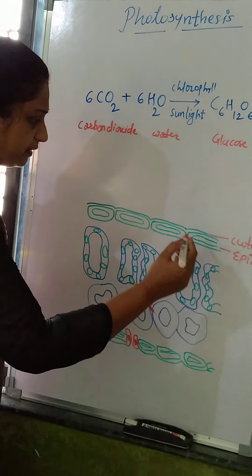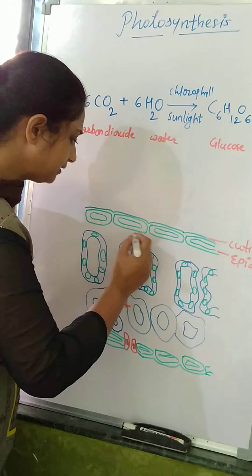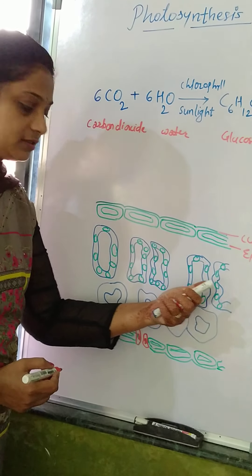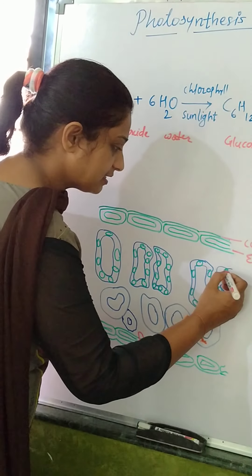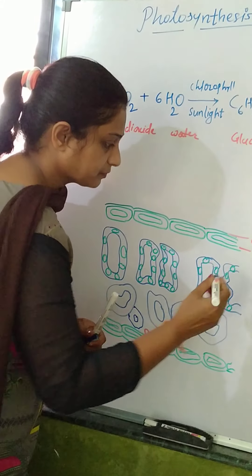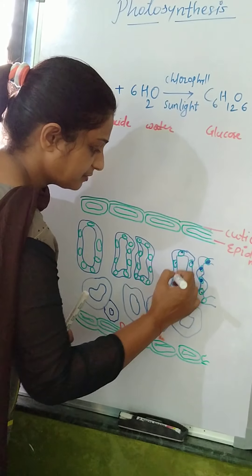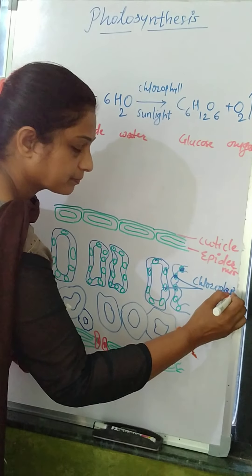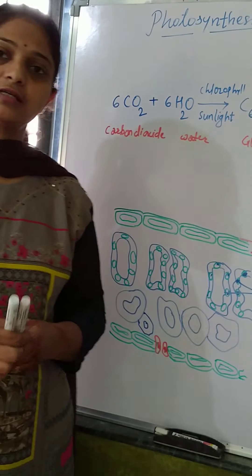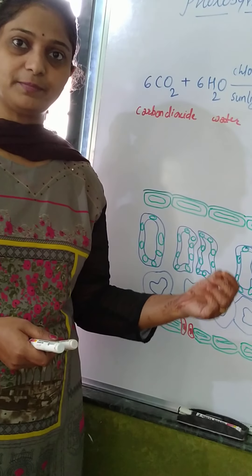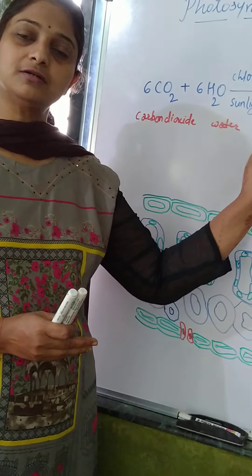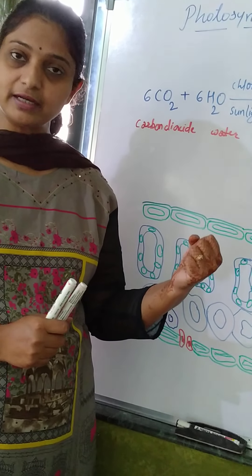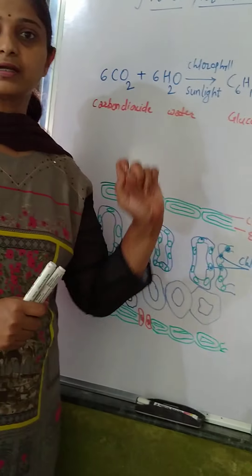Epidermis means the outer layer which is protective in nature. Now see here — below the epidermal layer, such cells are present. These are the palisade cells which contain green colored pigments. These green colored pigments are nothing but the chloroplasts. The function of this chloroplast is that it contains the pigments which are responsible for photosynthesis. This chlorophyll absorbs the solar energy — the light energy from the sun — and converts it into carbohydrates.